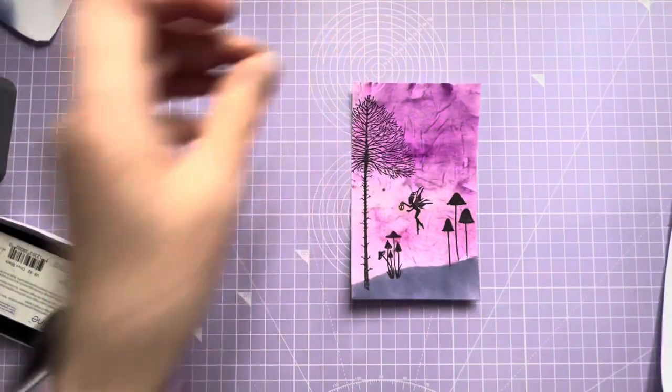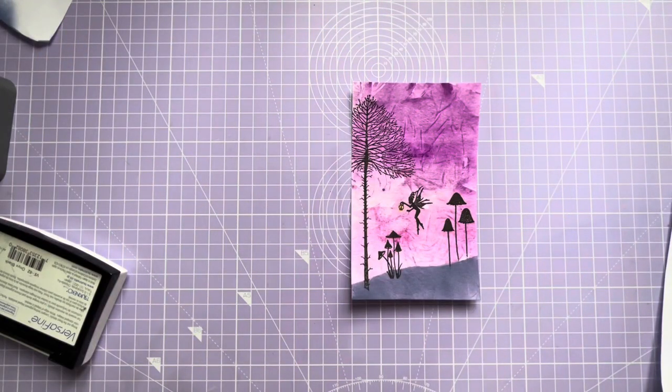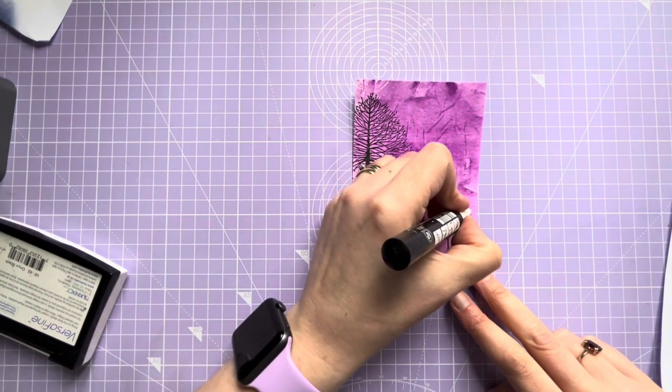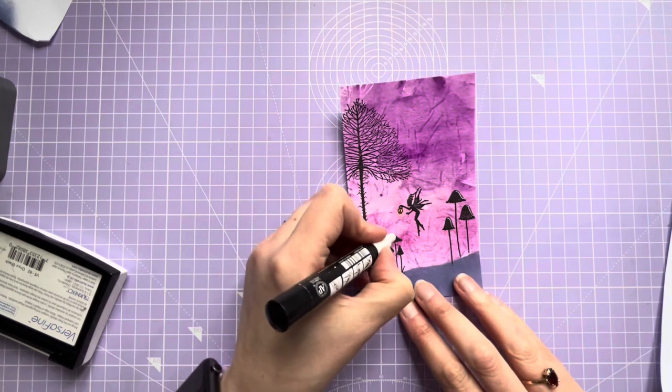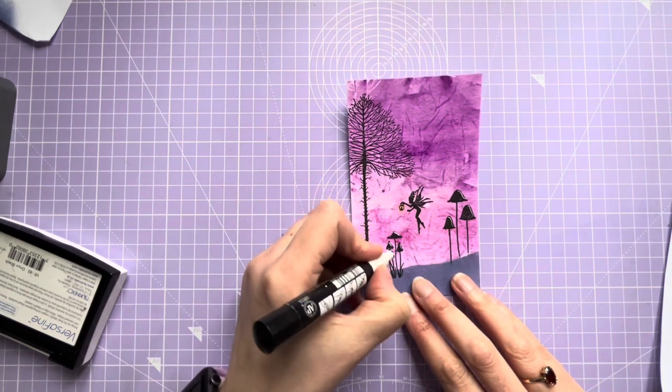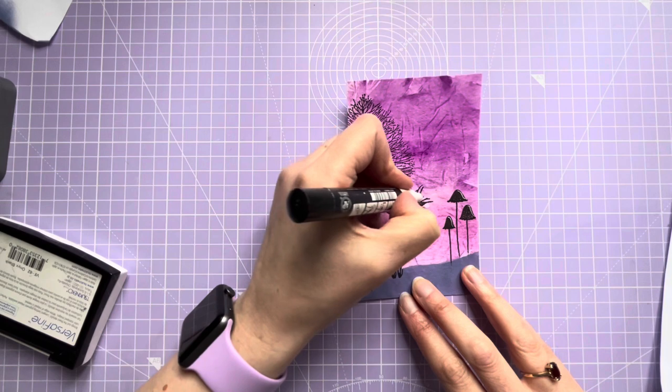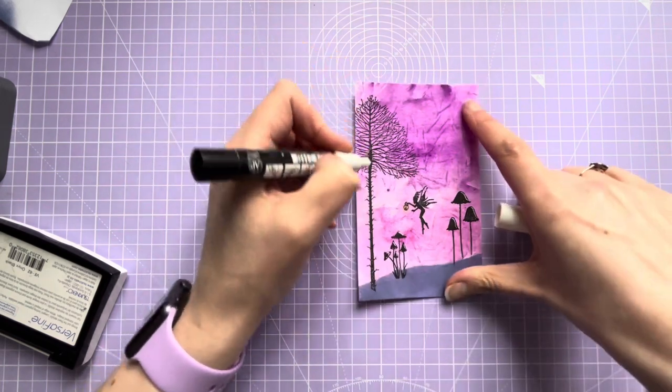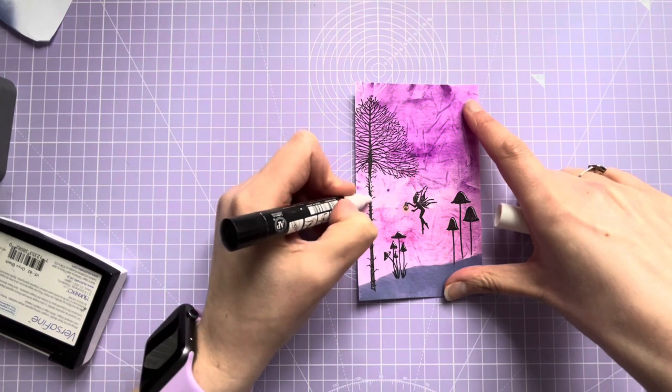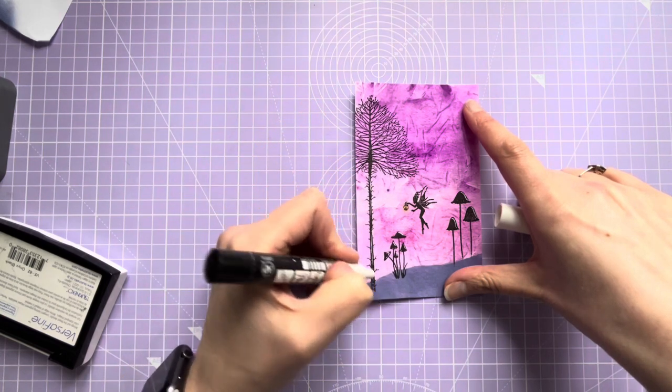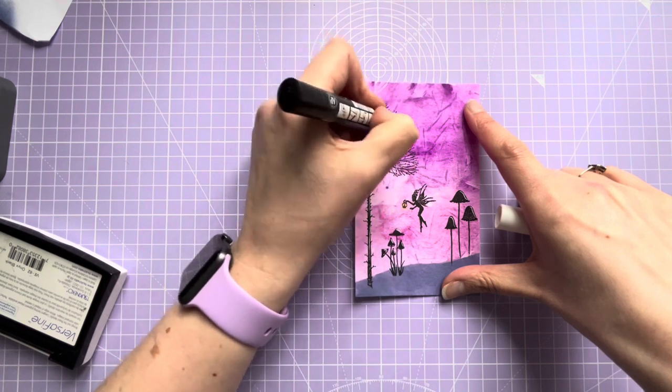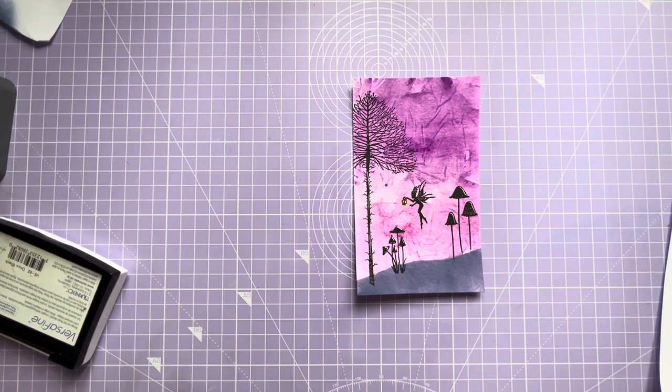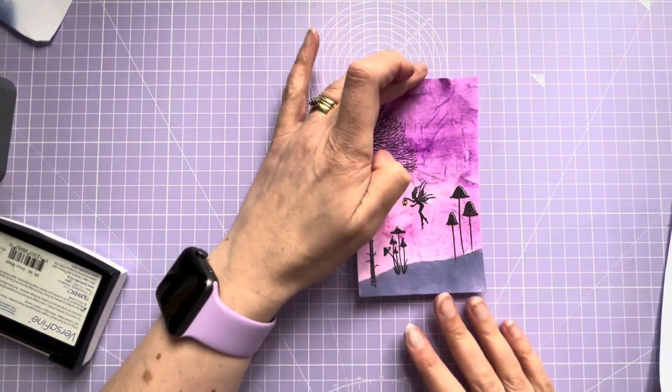And then I think what I'll do is I'll take the white Posca pen and just add a bit of highlighting just to possibly on the area as well. And then maybe on the tree, just down the tree's trunk. And then a few little dots in the tree, just on that side. And then we'll have to have something on there, a sentiment.